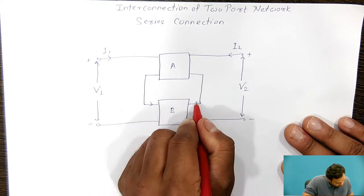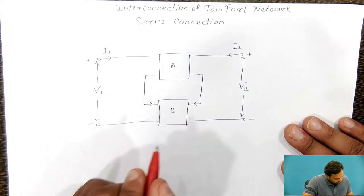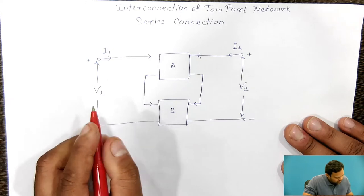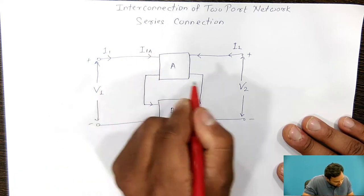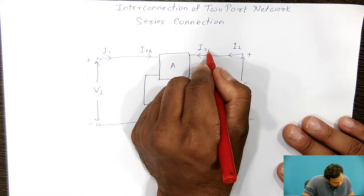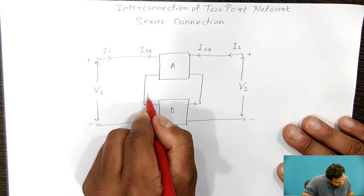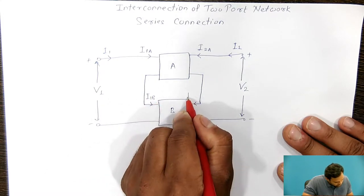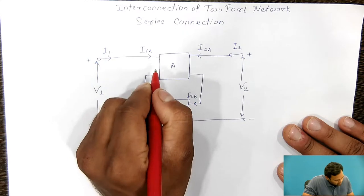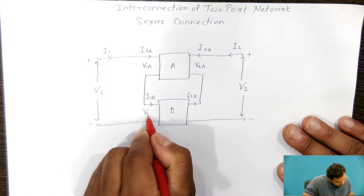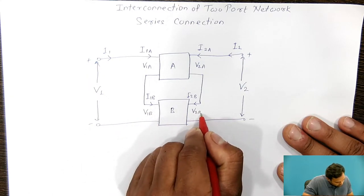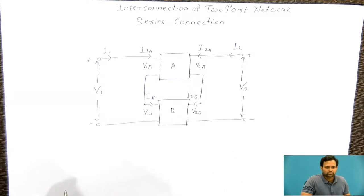Here is the current flowing through network B and here is the current flowing through network A. Currents are represented by I1 and I2. Voltages are V1 and V2. This is the series connection of two-port networks.